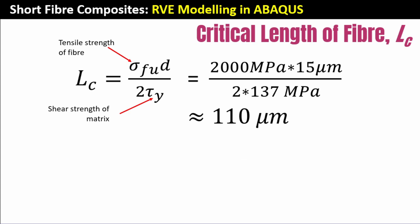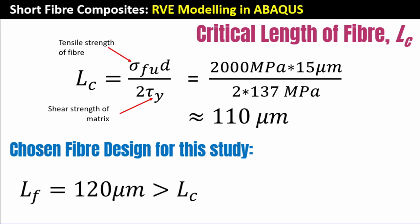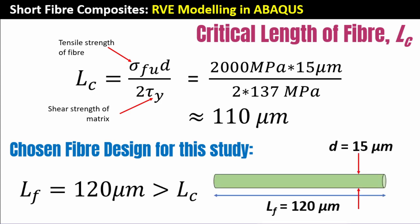The bigger the fiber length, the better. For this study, I've chosen to work with a fiber length of 120 micrometers, which is clearly bigger than L_c, which is what we want. The cross section we're going to use in three dimensions will be cylindrical; however, because our model is going to be 2D, this cylindrical system becomes a rectangle of length 120 microns and height 15 microns.